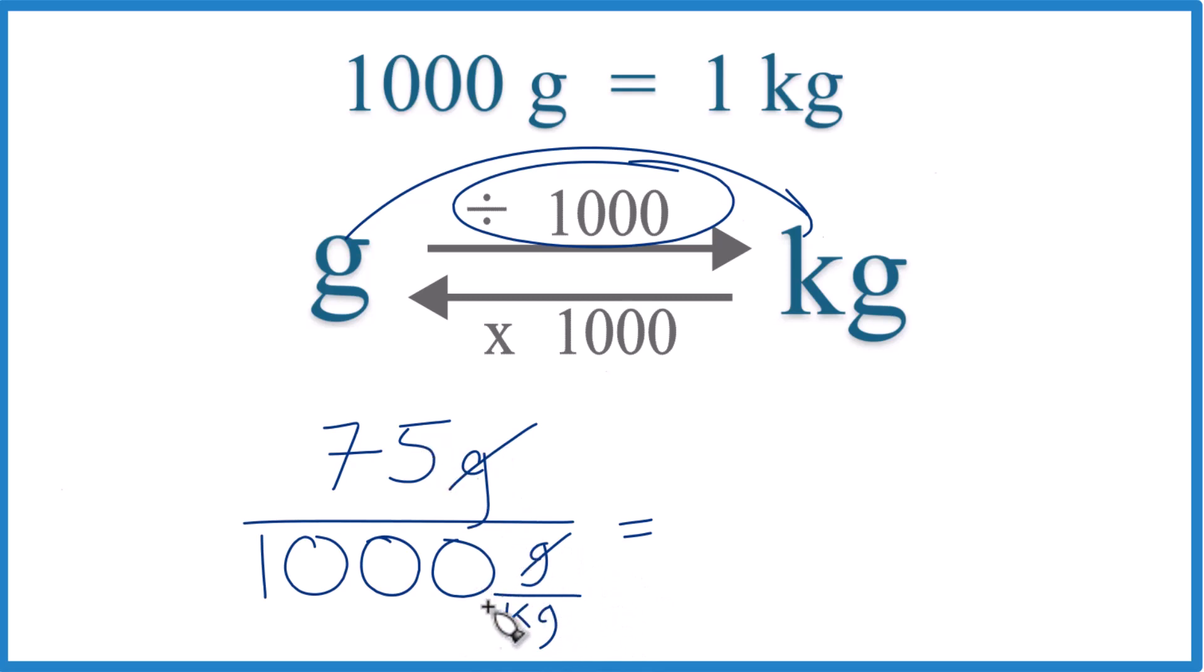So let's move the decimal place 1, 2, 3. So that gives us 1. And then up here the same, 1, 2, 3. Then put a zero as our placeholder. So we end up with 0.075 kilograms, because kilograms are the units we have left. So 75 grams equals 0.075 kilograms.